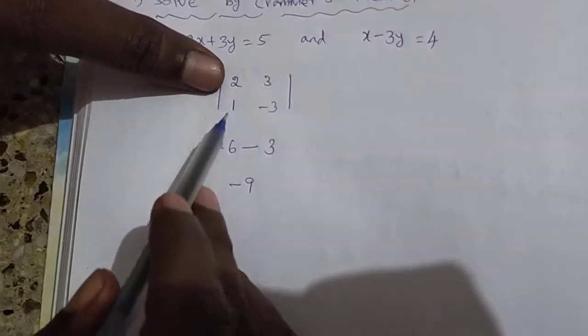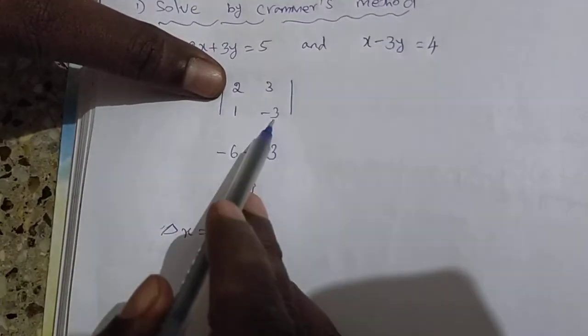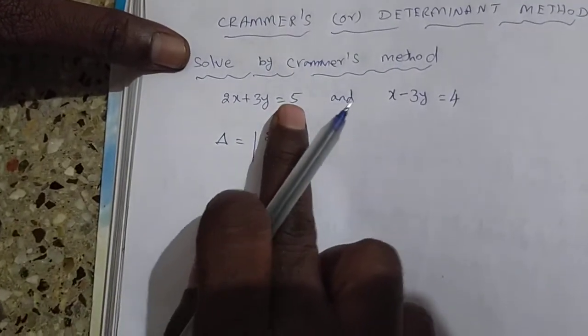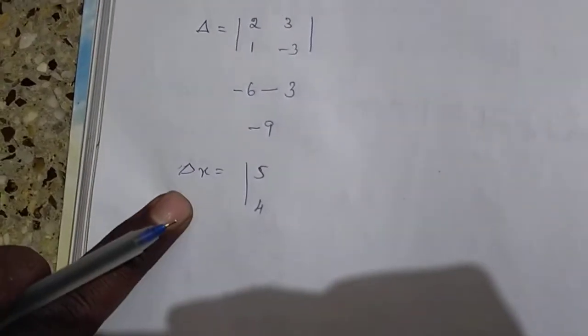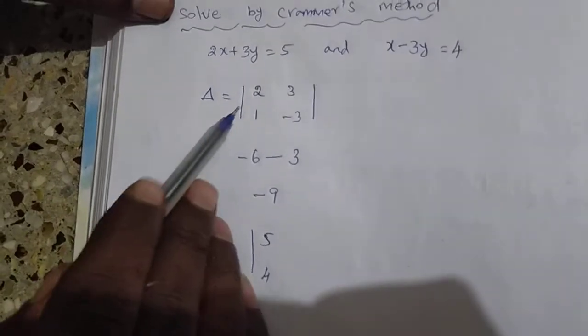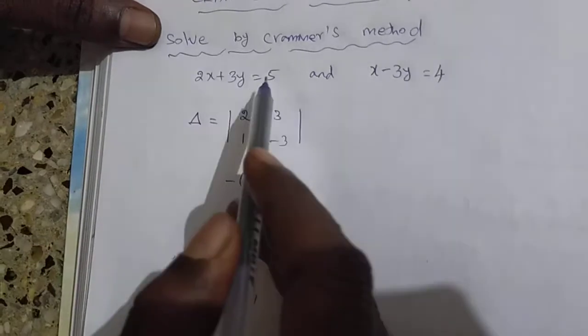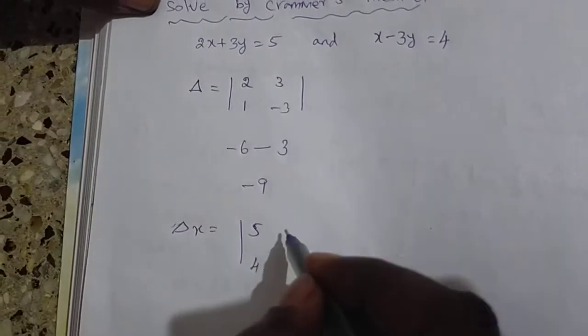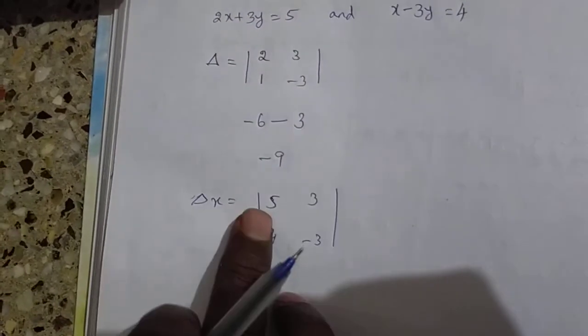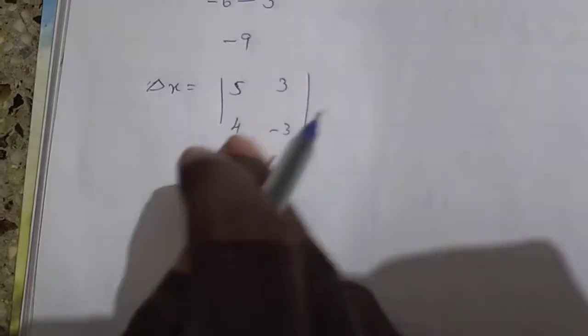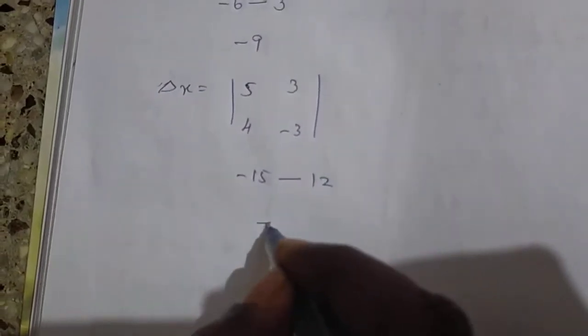The first column is X and the second column is Y. To find delta X, you remove the X term and replace it with the constant terms, which are 5 and 4, keeping the Y values 3 and minus 3. Now find the value: minus 15 minus 4 into 3 is 12, so delta X equals minus 27.